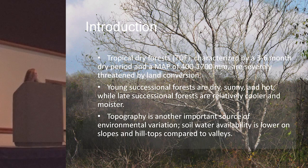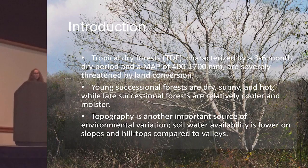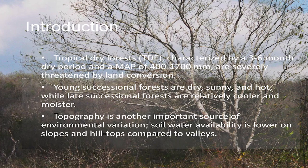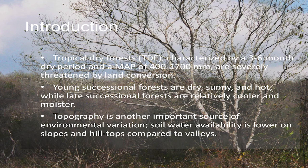Most of the information about tropical dry forests has already been given in previous talks, but I'm going to just remind you a little bit about them. They're characterized by a three to six-month dry period, with a mean annual precipitation between 400 and 1700 millimeters, and are severely threatened by land conversion. These areas are subject to quite a bit of differences in microclimate and environmental conditions, with young successional forests being typically very dry, sunny, and hot areas, while later successional forests are relatively cooler and have more moisture.